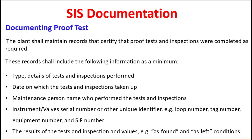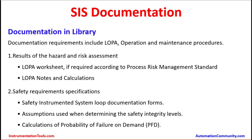Records shall also include the results of tests and inspections, including as-found and as-left condition values. During the initial point of the test, results could differ — for example, a 0 to 10 kg/cm² transmitter sensor could read 9.8 or 9.6. It will be 99% accurate, but there could be a small drift inside the sensor body. When it is calibrated and tested, accuracy has to be as close as possible to actual. Some documentation needs to be kept in the library for the plant's lifetime to support maintenance.